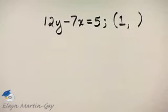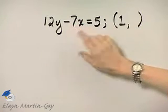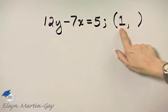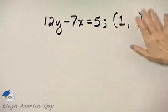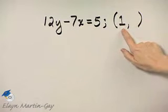We'd like to complete this ordered pair so that it is an ordered pair solution of this linear equation in two variables. Remember, x comes first, then y, so thus far in this ordered pair, we know that x is 1.